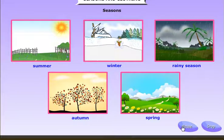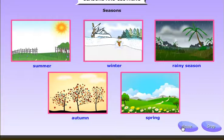In India, we have three main seasons: summer, winter, and rainy season.